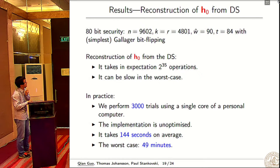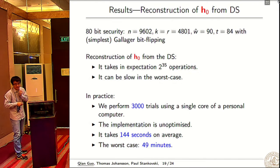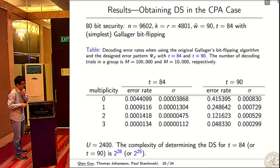This is the results. We use these parameters and Gallagher's bit flipping algorithm. In expectation it takes 2 to 35 operations, but can be slower in the worst case. In simulation, we performed 3,000 trials using a single core of a personal computer with unoptimized implementation. On average it takes 144 seconds, and in the worst case 49 minutes.